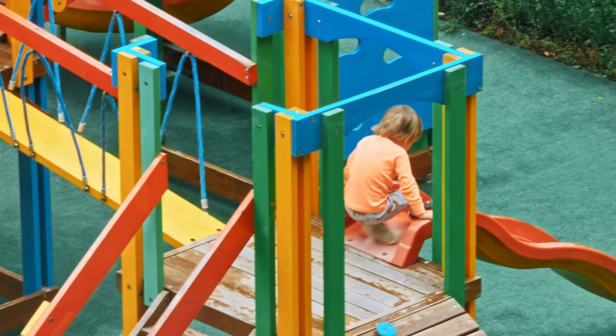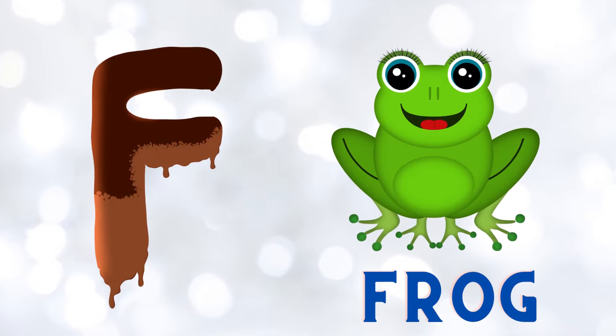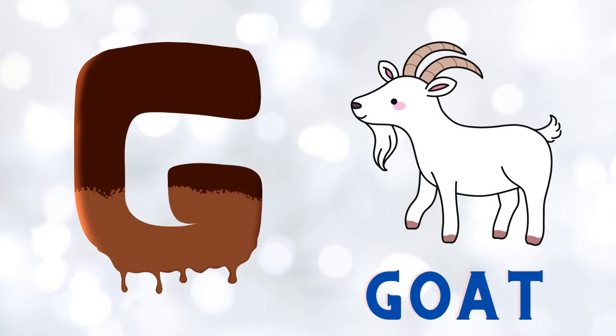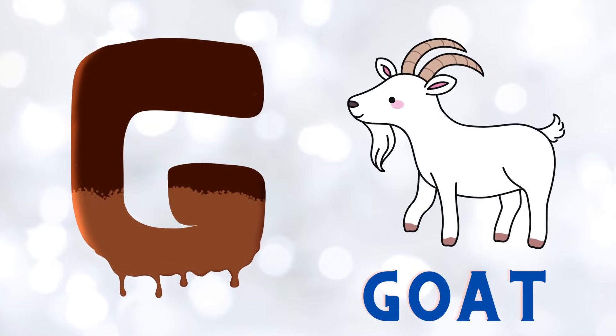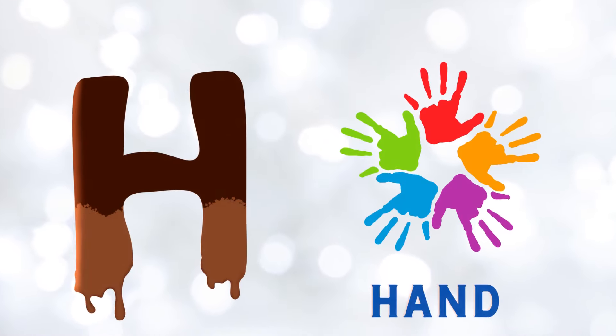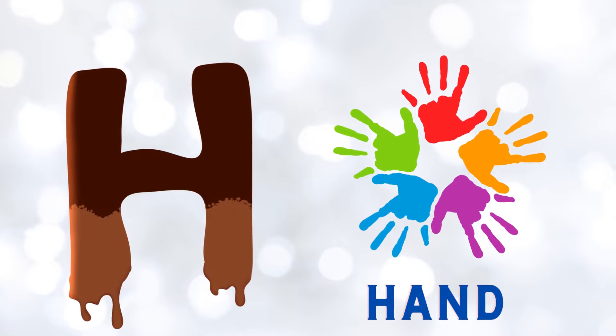E is for elephant, e-e-elephant. F is for frog, f-f-frog. G is for goat, g-g-goat. H is for hand, h-h-hand.